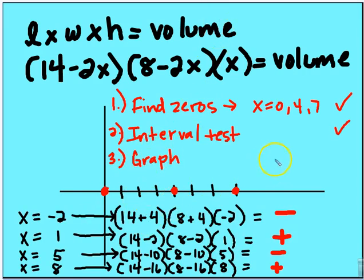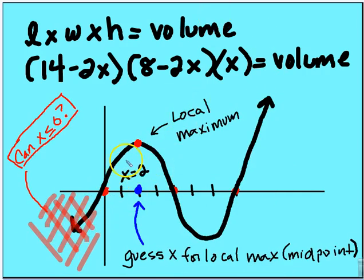And then we're going to test the intervals. So we're going to interval test here and here and here and here, and I end up with negative, positive, negative, positive. So I'm going to graph the general behavior of the function. I didn't have any double roots or triple roots, so I'm going to graph the function here.